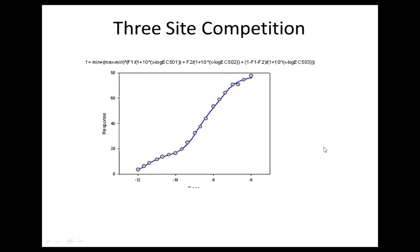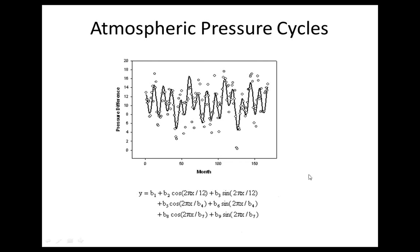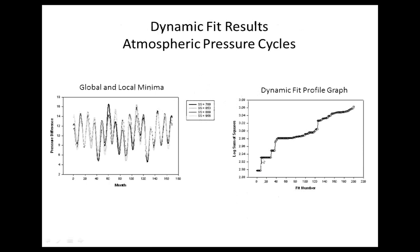Another example: atmospheric pressure cycles with a very complicated many-parameter equation. The profile shows a global minimum with one or two fits, local minima, and then a mess of solutions that are probably meaningless. The top three solutions are graphed — frequencies are all the same for the three but amplitudes differ slightly. Your job is to pick the correct one, probably the lowest sum of squares.